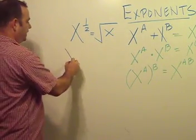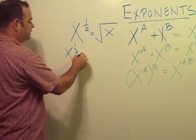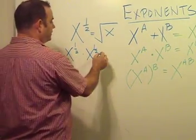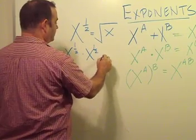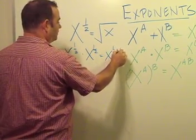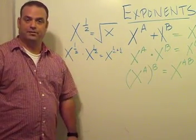And x to the one-half is just simply equal to the square root of x. Because if I had x to the one-half times x to the one-half, I would add the two together. I would have a plus b, and that is equal to x to the one-half plus one-half, or x to the one itself.